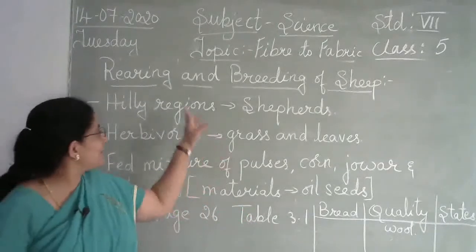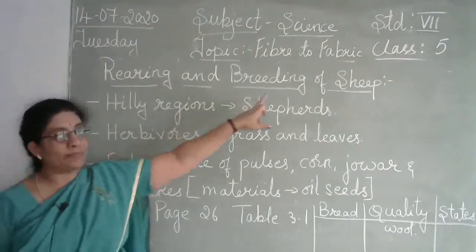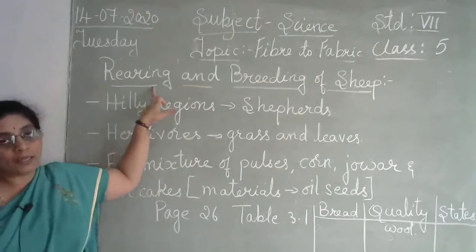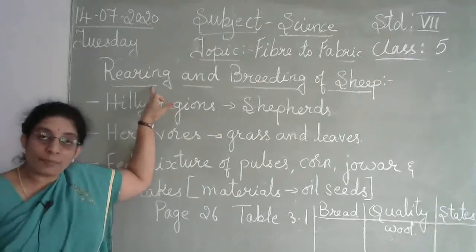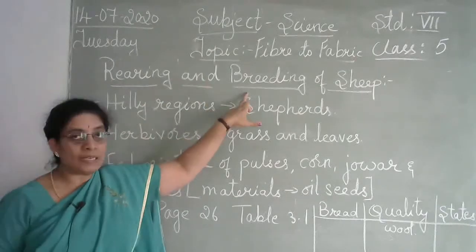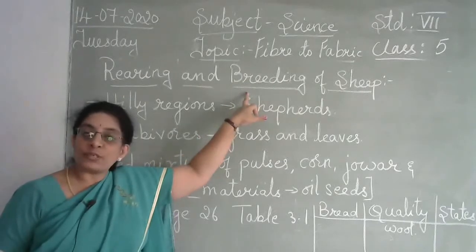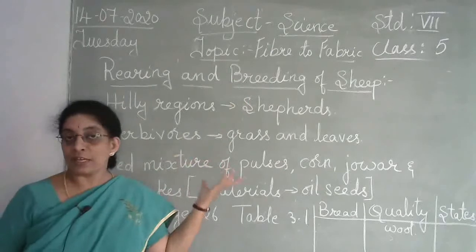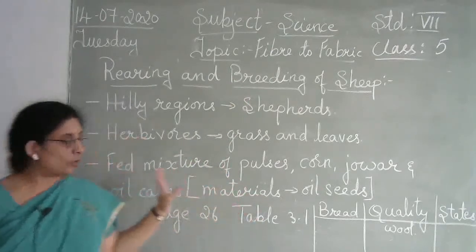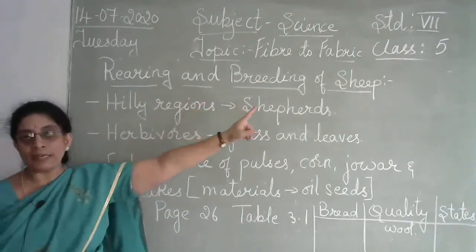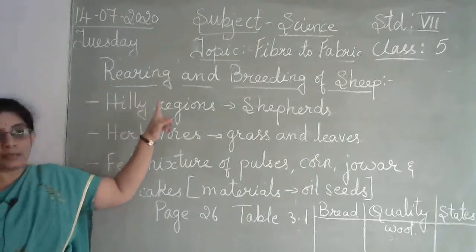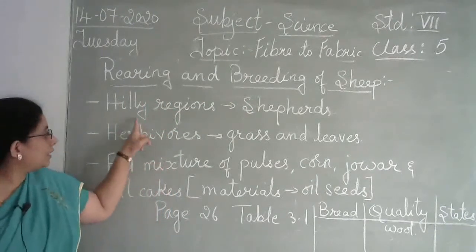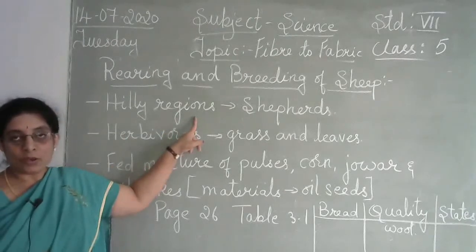Now let's see about the rearing and breeding of sheep. Rearing means how the sheep is being taken care of and brought up. Breeding means what foods are given to the animals so they can produce fine quality wool. Sheep mostly go to hilly regions to graze, where plenty of good quality grass grows.